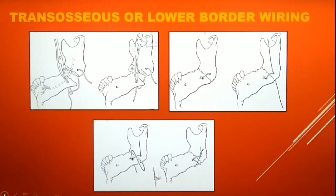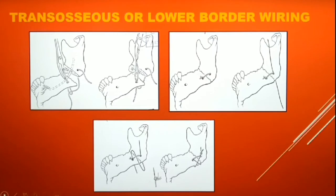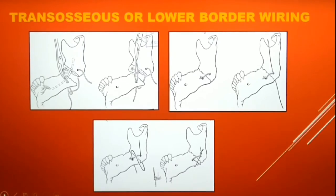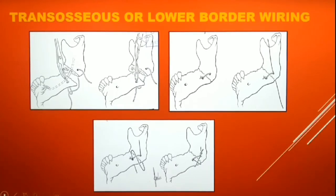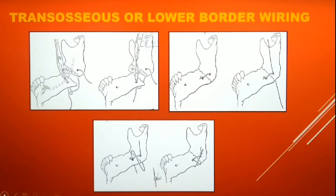In today's lecture we shall be discussing about the methods of osteosynthesis with intermaxillary fixation. The first technique is trans-osseous wiring, also known as direct wiring of the mandible, and is usually used in combination with interdental eyelet wiring, cap splints, or Gunning type splints. Indications include fracture of the edentulous mandible and grossly comminuted mandibular fractures. It is also used to stabilize the inferior border of the mandible in a fracture where the superior border has already been stabilized by other means.